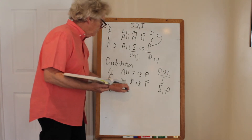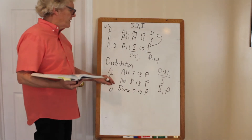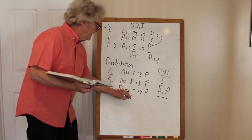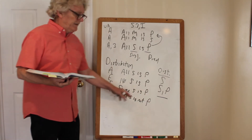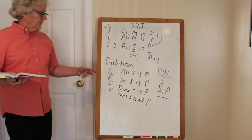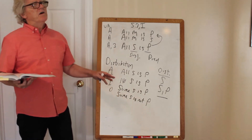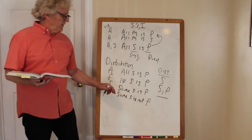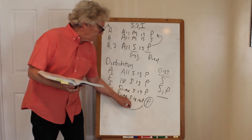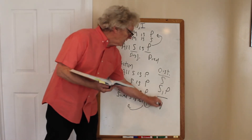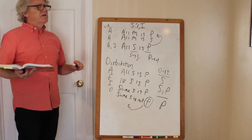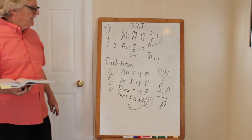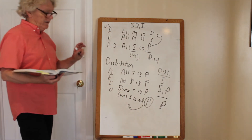For 'some S is P' — an I proposition — we're not referring to all S's or all P's, so nothing gets distributed. The counterintuitive one is 'some S is not P' — the O proposition. Clearly we're not distributing S; we're saying some are not P. But the P's are being distributed. For example, 'some horses are not thoroughbreds' — we're not saying something about all horses, but we are saying something about all thoroughbreds. So the predicate term in an O proposition is distributed.